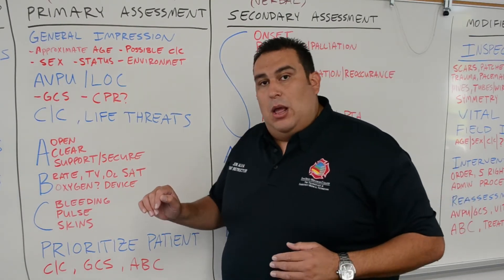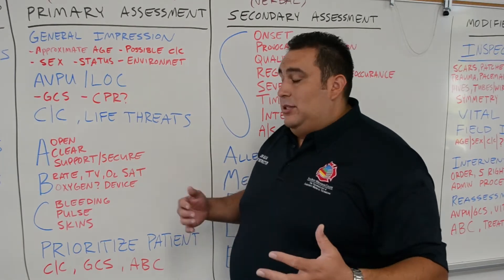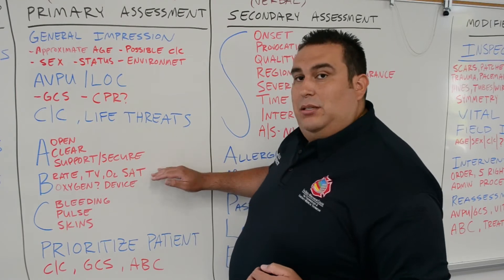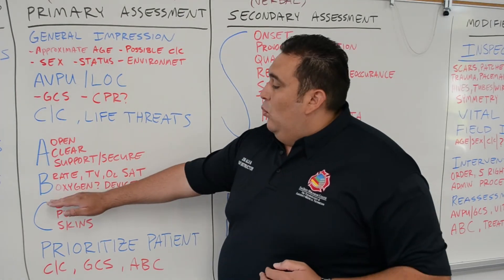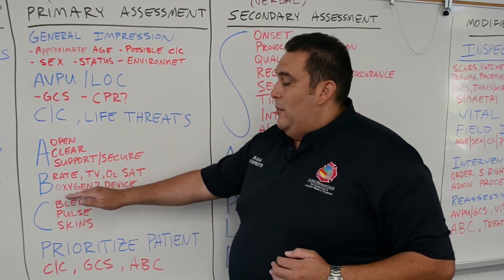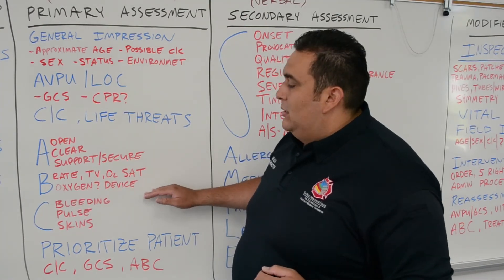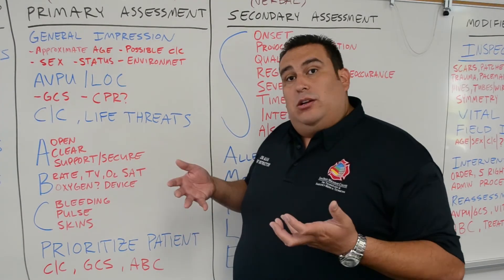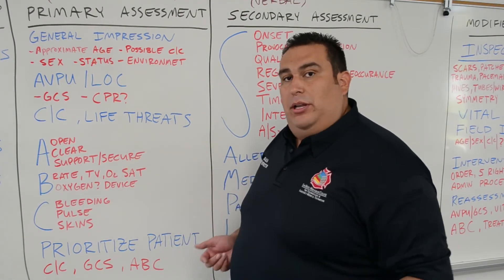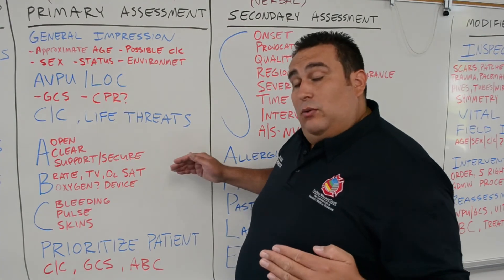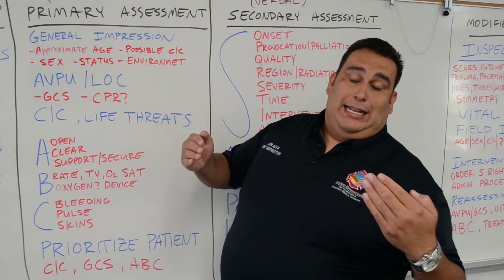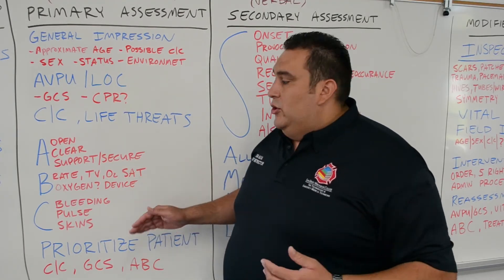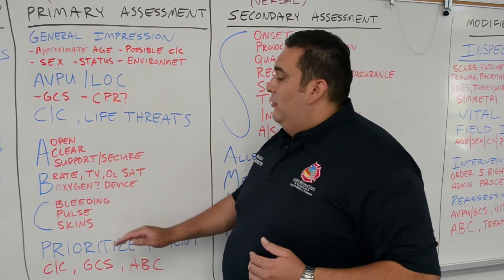Check the O2SAT, but remember it can be variable across patients — treat the patient, not just the number. Once oxygen is indicated, choose the correct delivery device. For a patient with adequate but increased rate and tidal volume, consider a non-rebreather. For a milder case of shortness of breath with adequate rate and tidal volume, a nasal cannula may be appropriate. Assess rate and tidal volume very specifically.